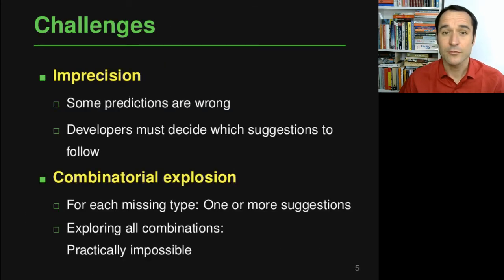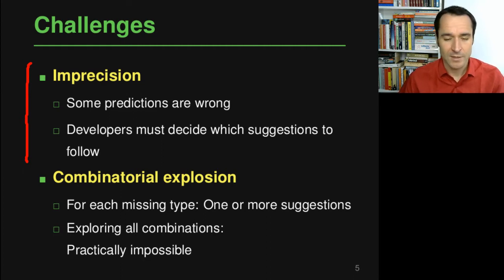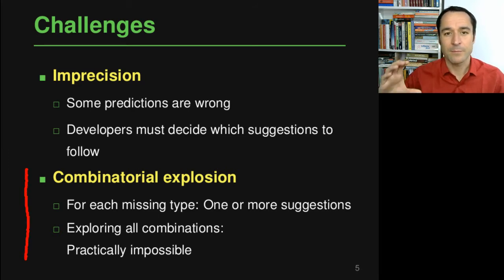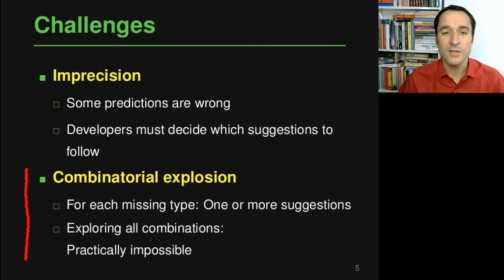These probabilistic type prediction approaches have a lot of advantages but also bring a couple of challenges. The first is imprecision — because these models are probabilistic, they may make wrong predictions, and in practice they do. A developer must decide which suggestions to actually follow. The second problem is a combinatorial explosion: for each missing type there will be one or more suggestions, and exploring all combinations to decide which to use is not feasible for large programs.